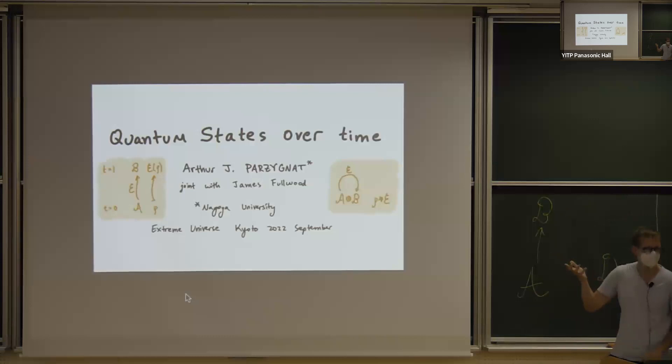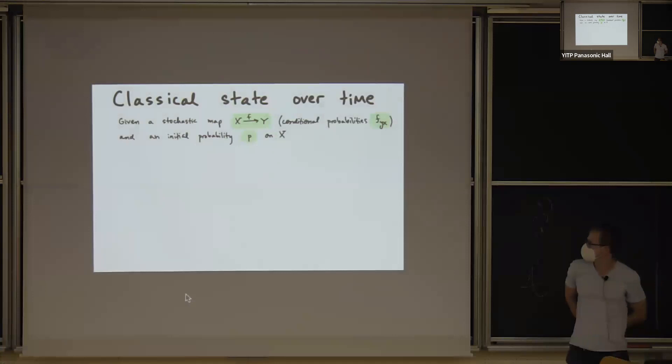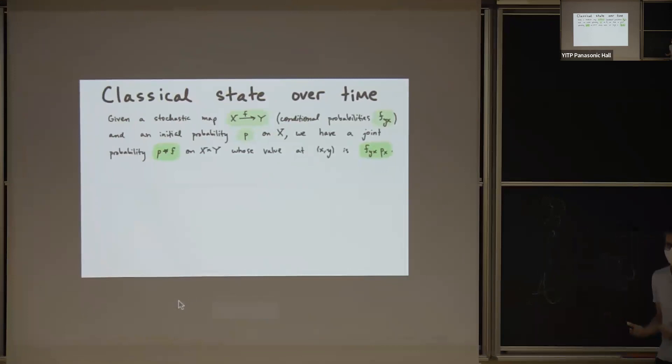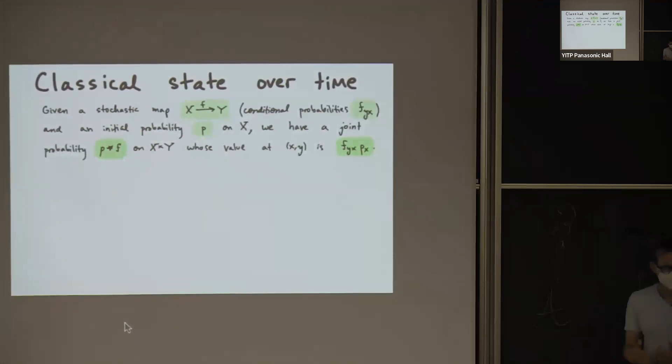So let me begin with the classical situation. In the classical situation, we have a stochastic map from some initial state space to a final one, which is described by conditional probabilities. And we also have an initial probability P on X, that's like our initial state. And with these two data, we can construct the joint probability, which I'll denote by P star F, on X tensor Y, or X cross Y, whose value is given by the product of these two numbers.